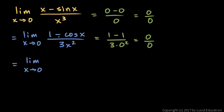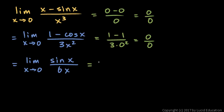This will equal the limit as x approaches 0 of the derivative of the numerator over the derivative of the denominator. The derivative of 1 is just 0, so we have 0 minus the derivative of cos x. The derivative of cos is negative sin, so minus negative sin x is positive sin x. So the numerator is sin x, and the derivative of the denominator is 6x. If we substitute x equals 0, we get sin of 0 over 6 times 0, which is 0 over 0. So we apply L'Hôpital's rule again.